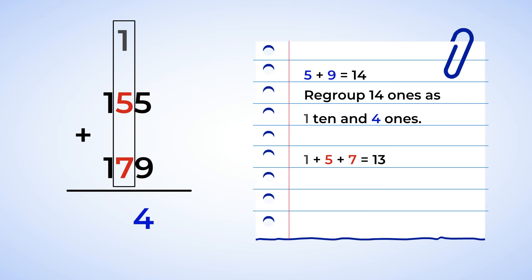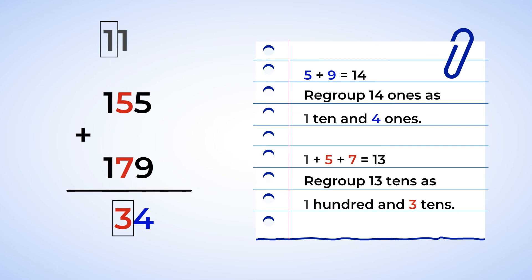Now I have the same situation as the ones place. 13 is a two-digit number and so you need to regroup the place value one more time. 13 tens you present as a 100 and 3 tens. Write down 3 in the tens place of the solution and write 100 above the addends hundreds place.